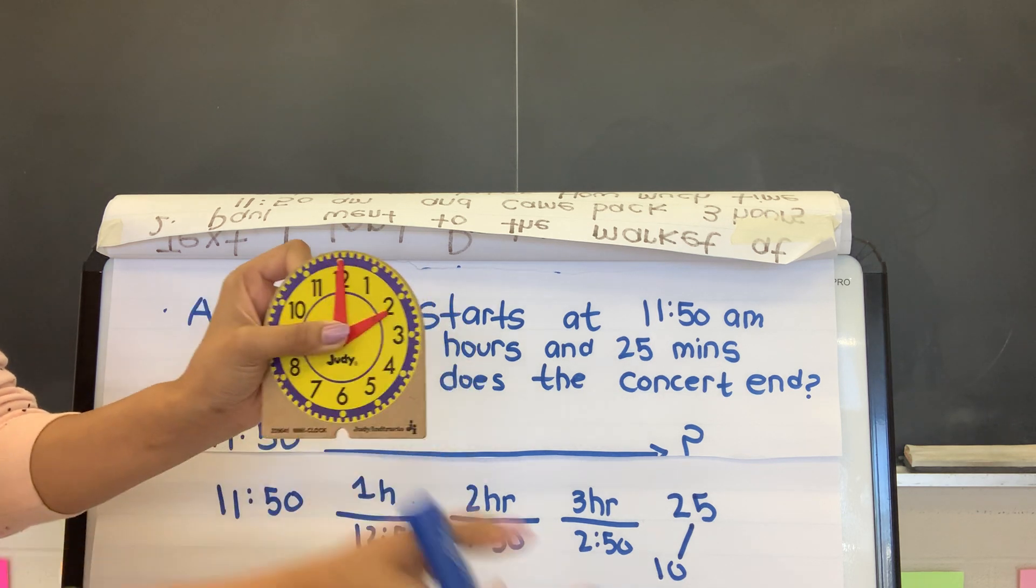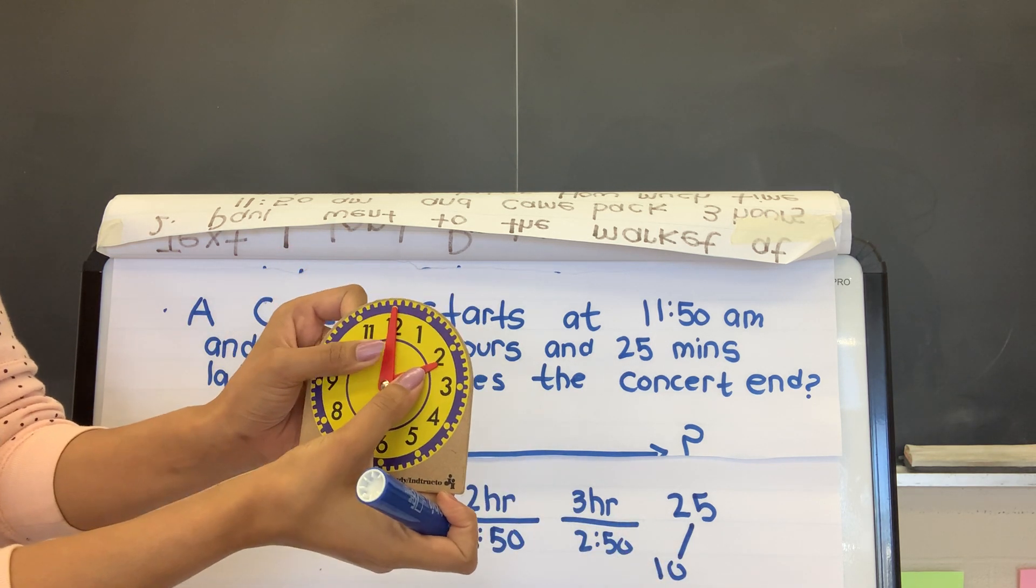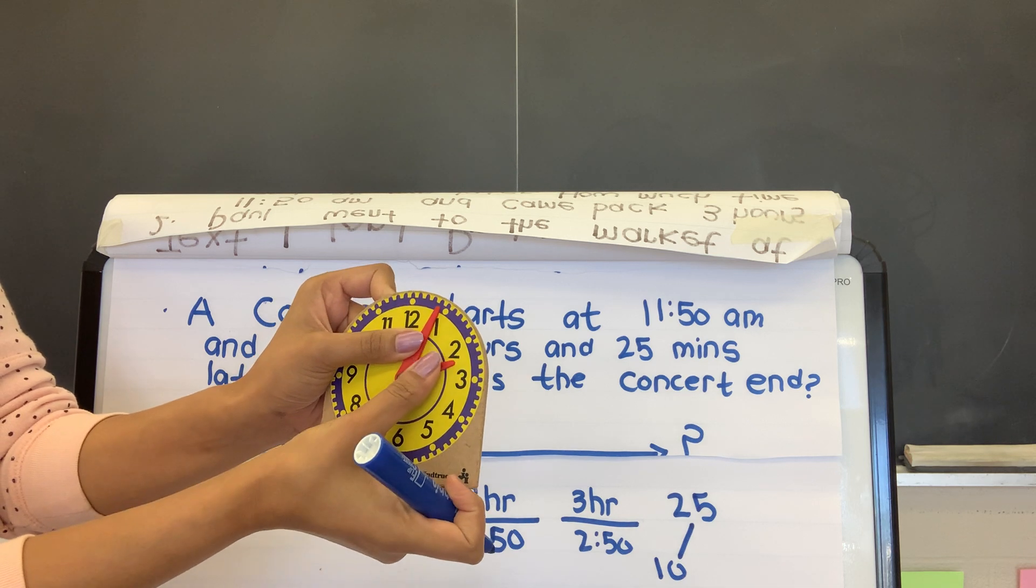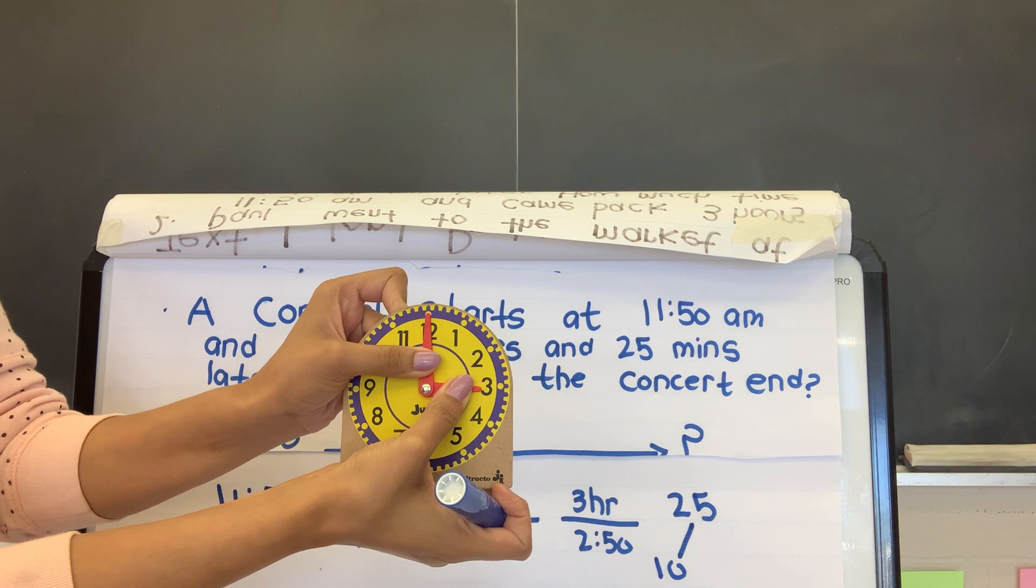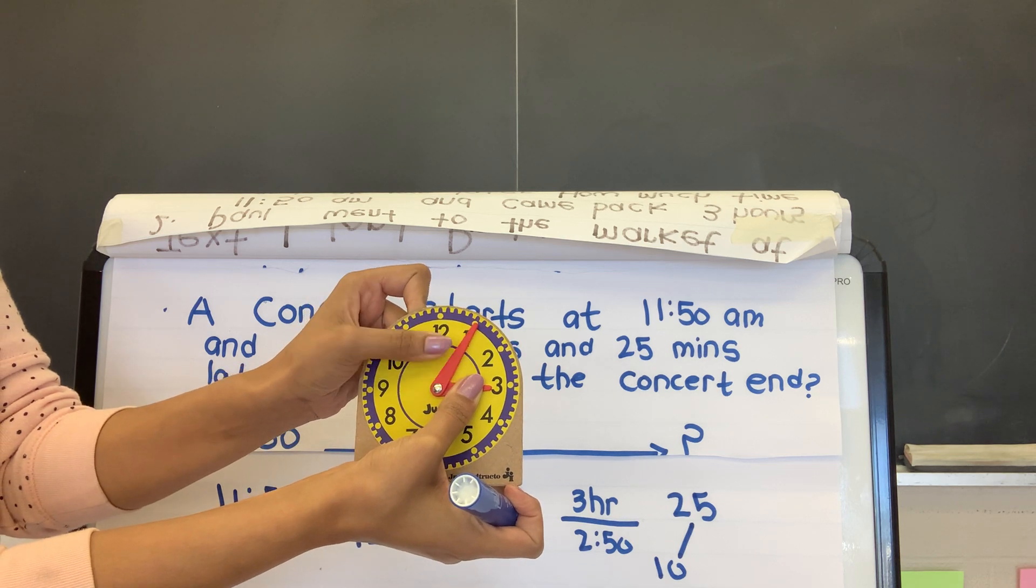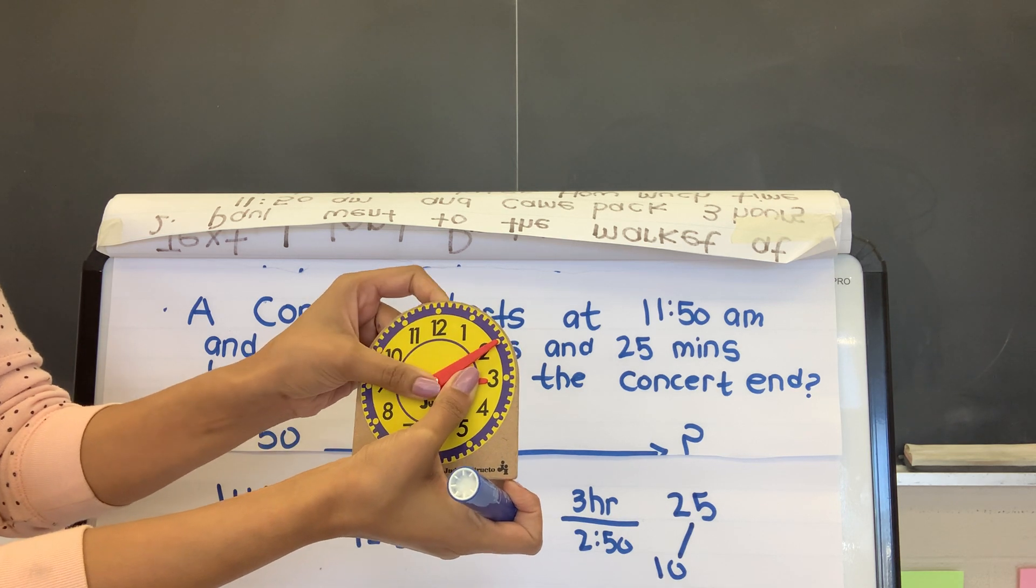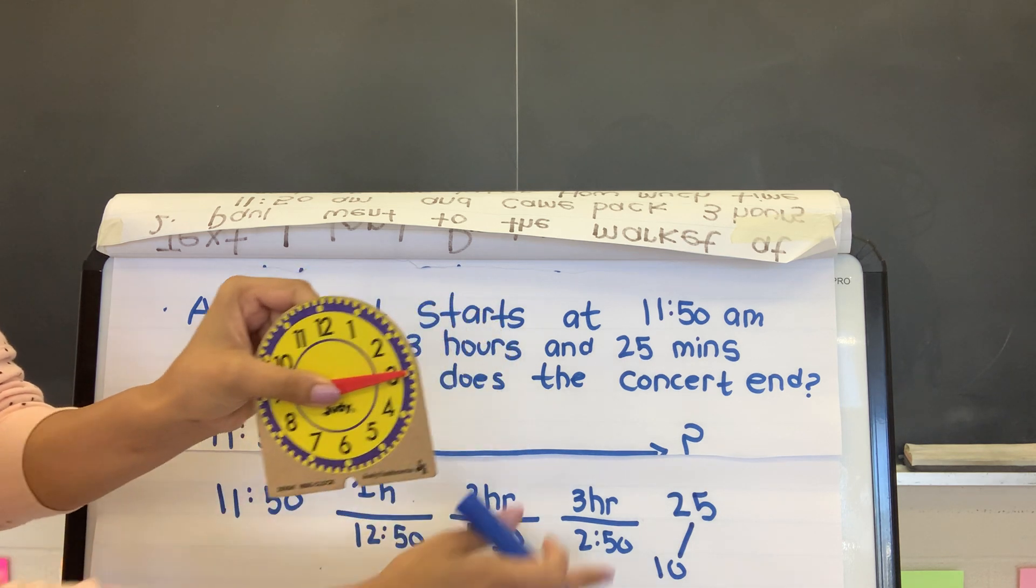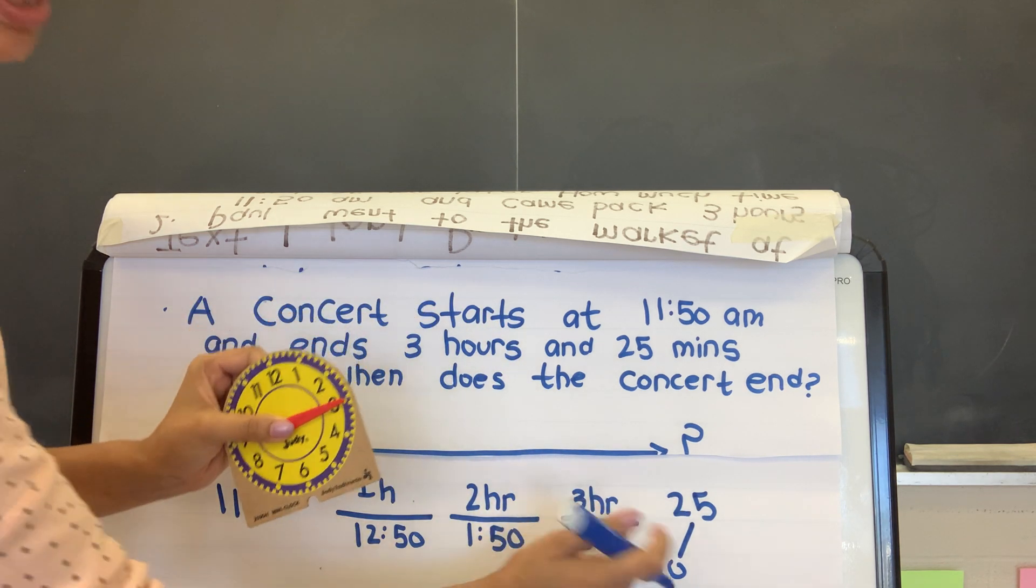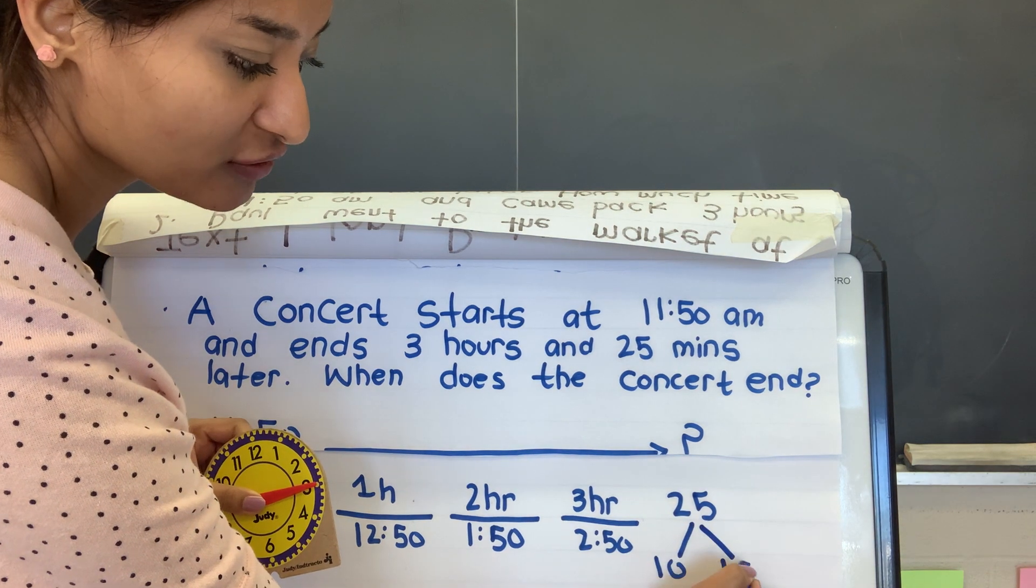10, and then, so out of 25, I have 10, and then I have 5, so it should be at 3 o'clock. So I have 10 already, then 15, then 20, and then 25.